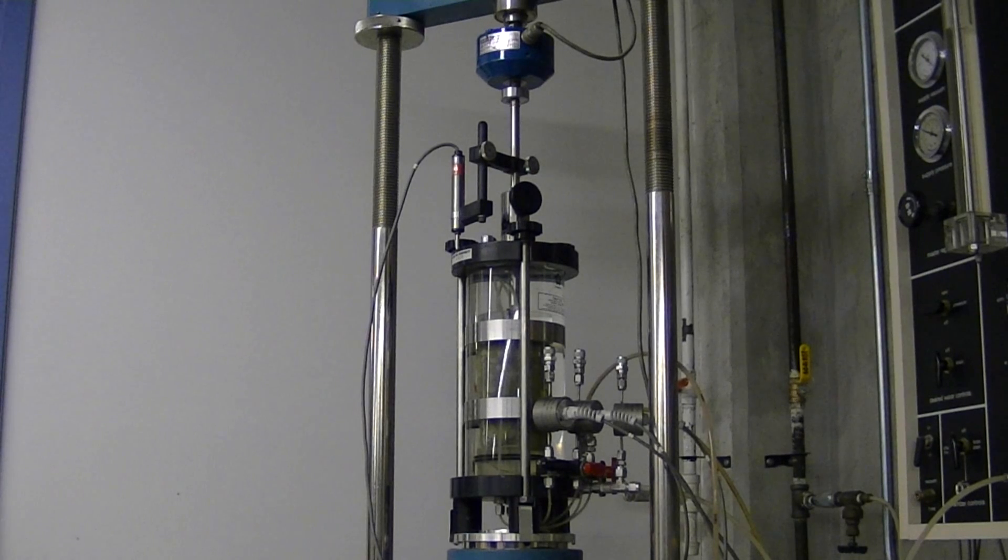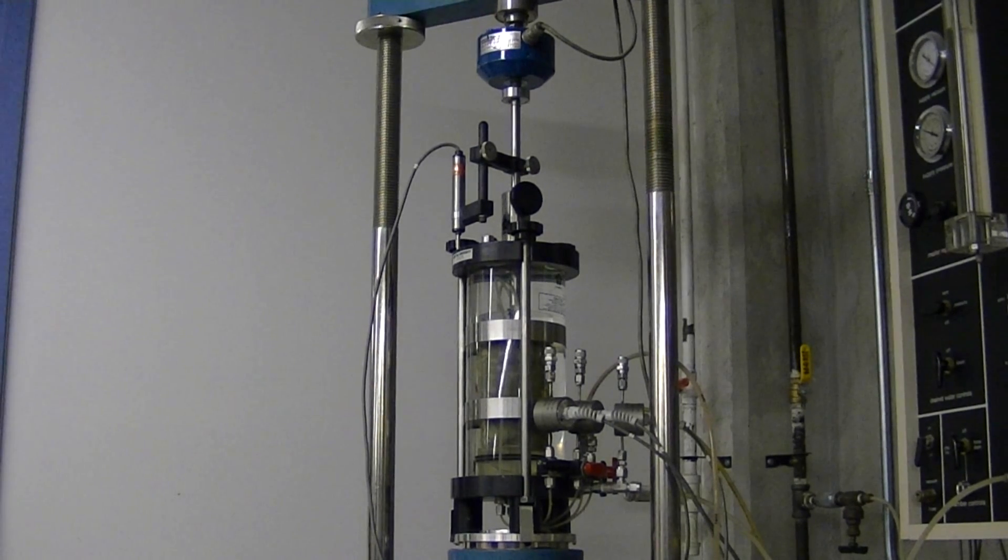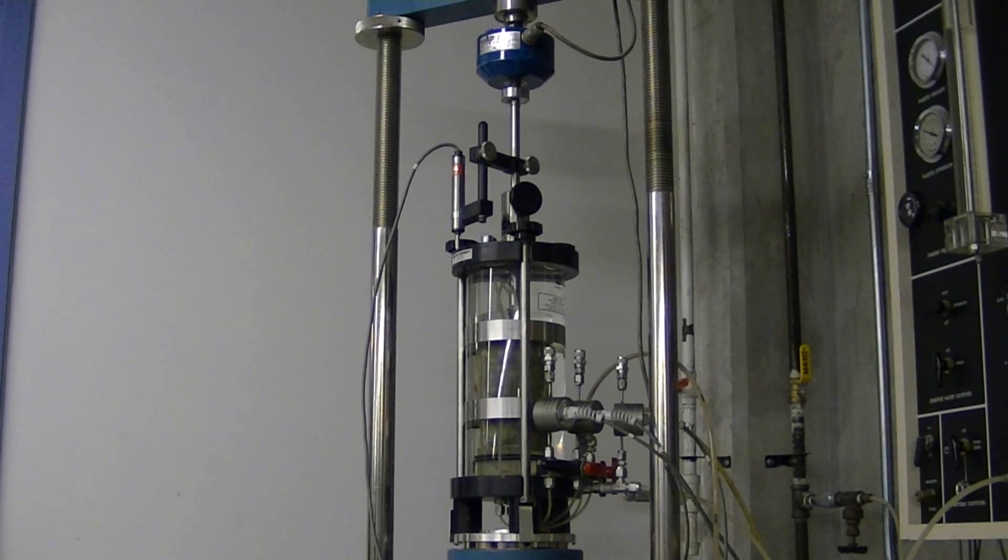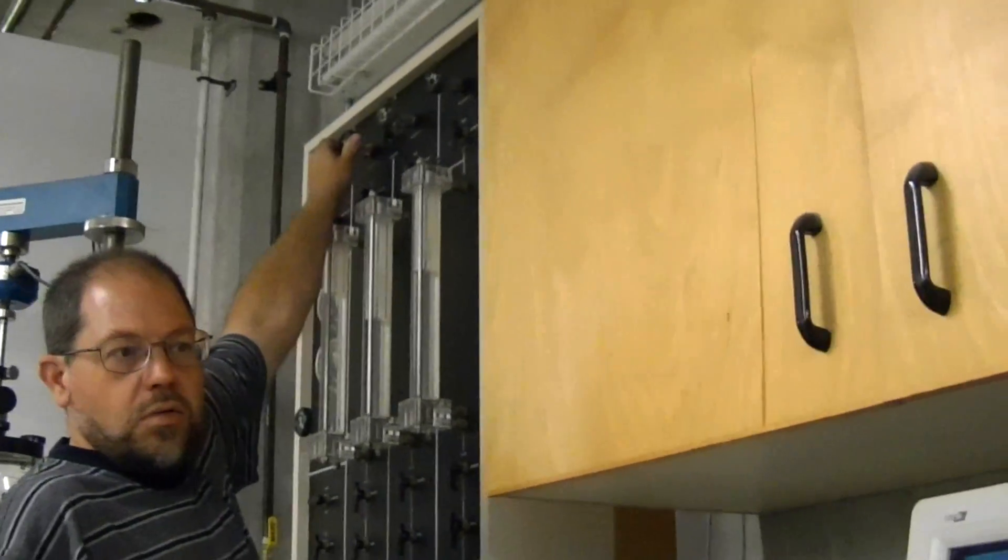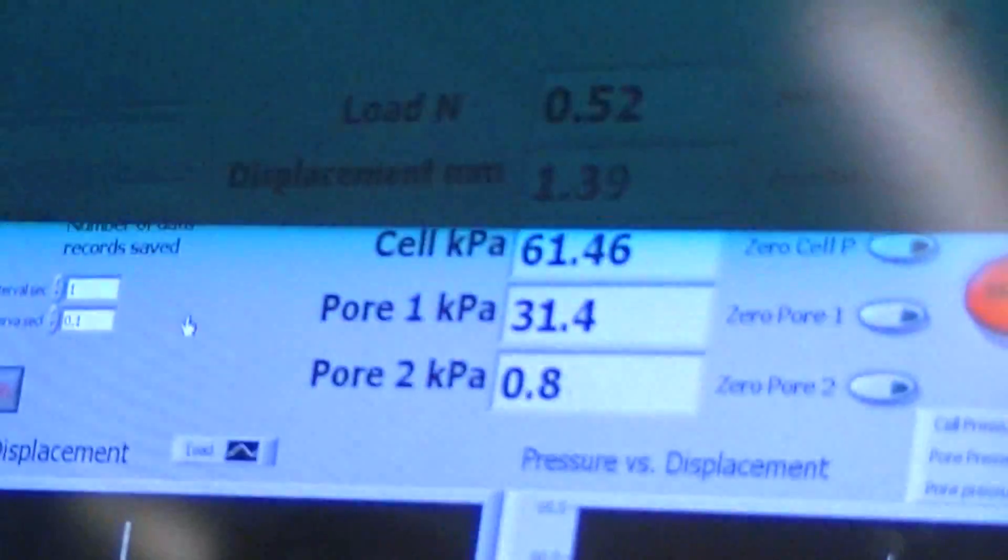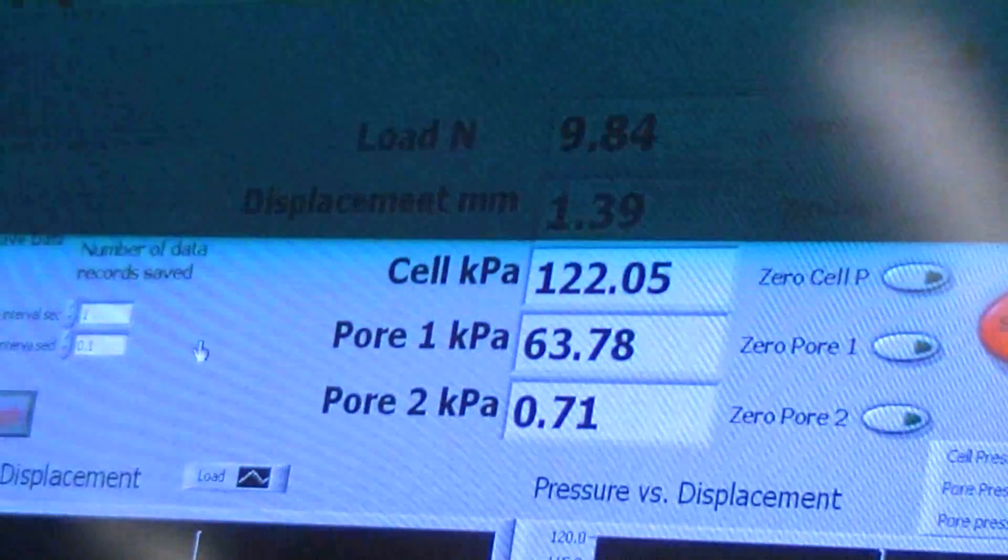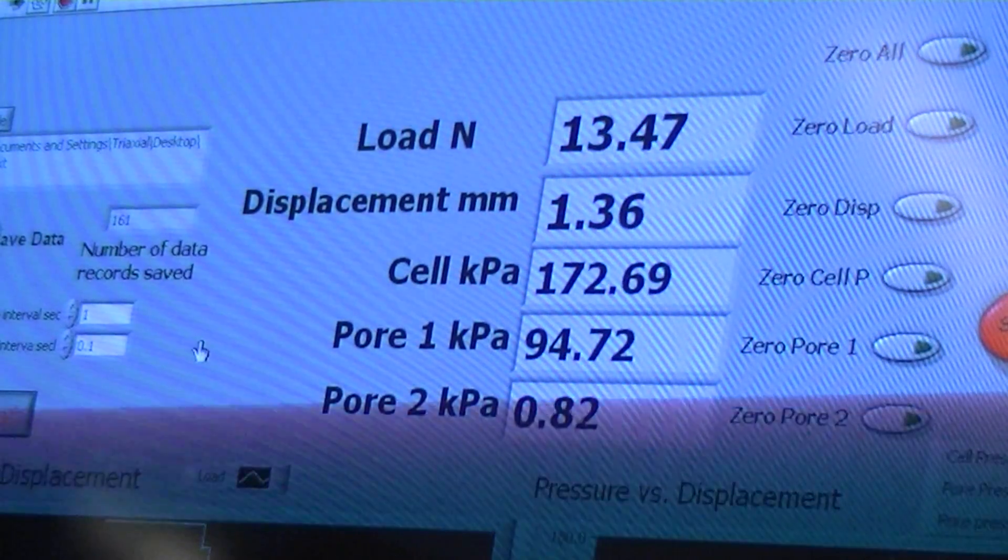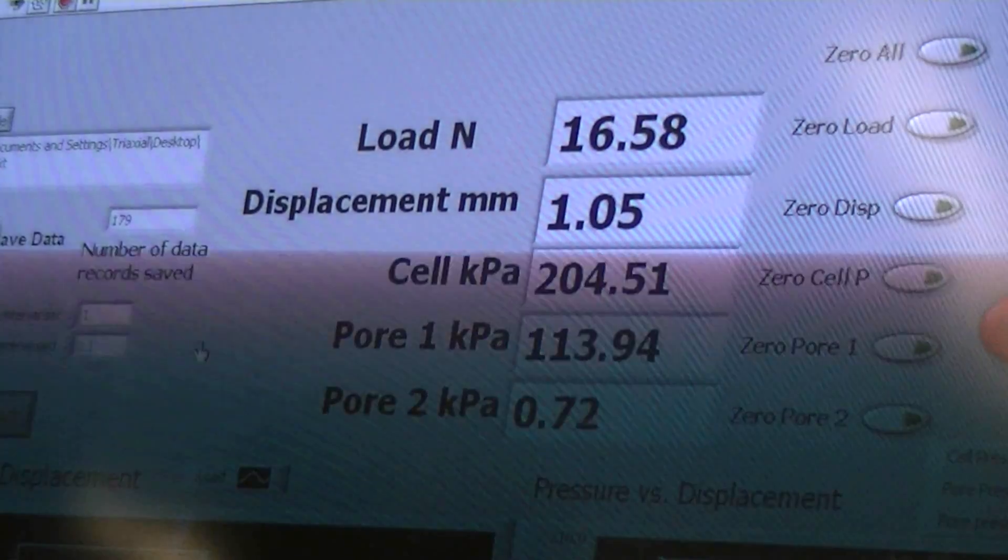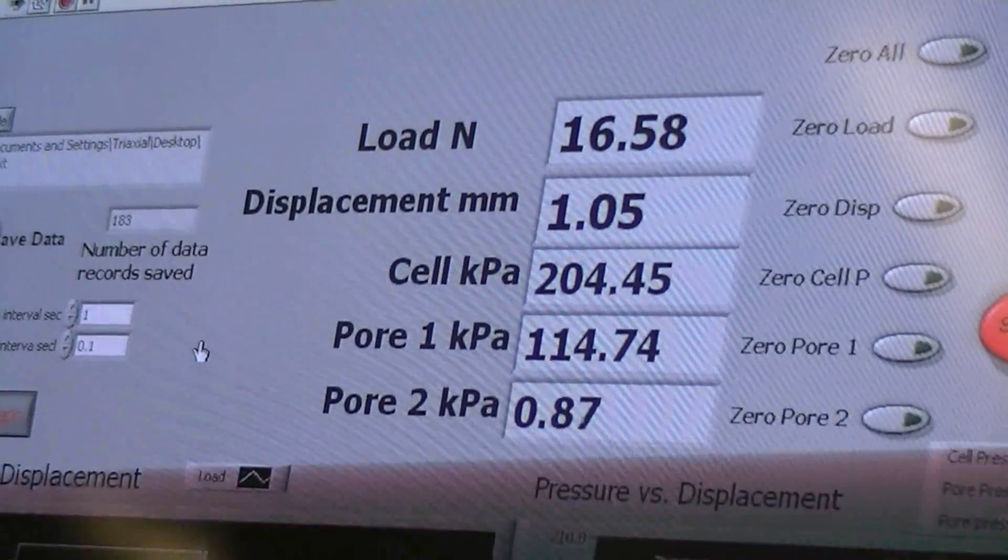We're going to do what is called a quick undrained test, which basically means that the water within the sample is not going to be allowed to drain out. So we're going to seal off the water connections to our panel. The water pressure in the sample should rise as it's being squished like a balloon because of the vertical compression. I will set the cell pressure to 200 kPa by turning the knob and increasing the water pressure in the cell. Now we have a pressure inside the cylinder of 200 kPa.